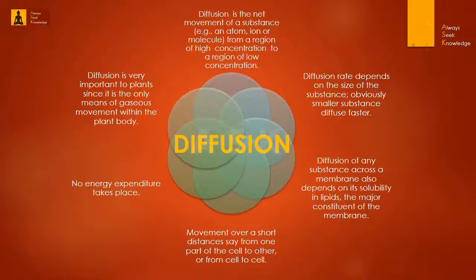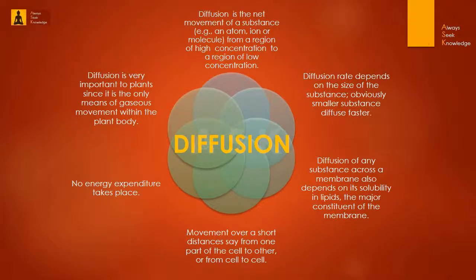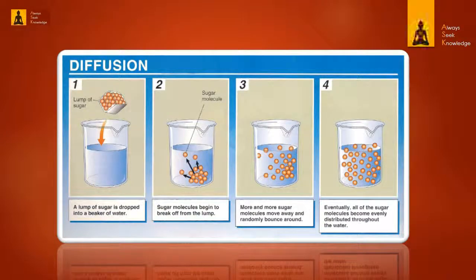The rate of diffusion depends on the size of the substance - smaller substances diffuse faster. Diffusion of any substance across a membrane also depends on its solubility in lipids, the major constituent of the membrane. Movement over a short distance, from one part of the cell to another or from cell to cell, requires no energy expenditure. Diffusion is very important to plants since it is the only means of gaseous movement within the plant body.